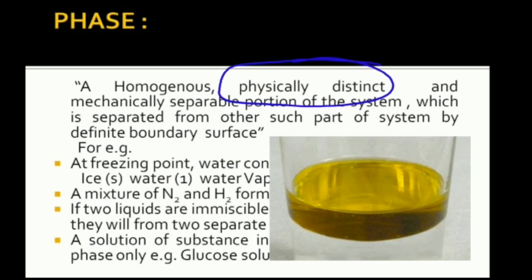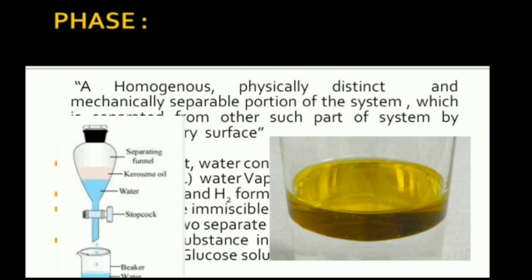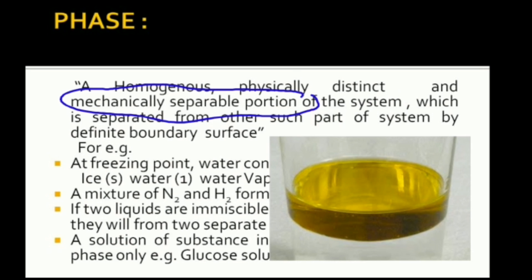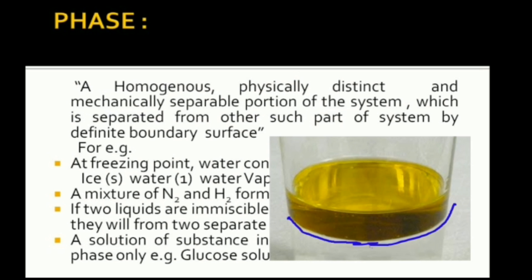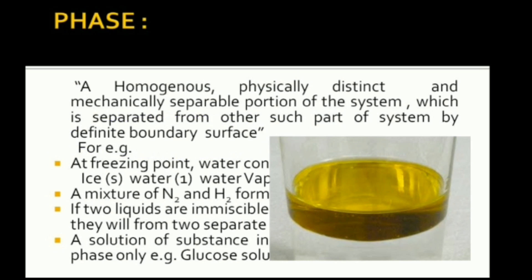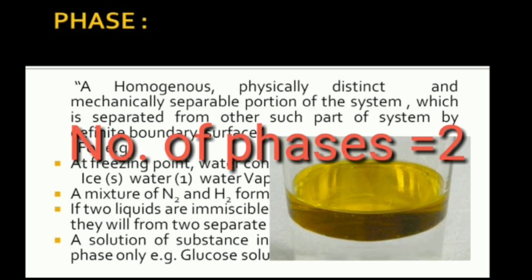By some means we can separate these two portions — as you know, by using a separating funnel we can separate them. These two homogeneous portions are also separated by a definite boundary. So in this heterogeneous system there are two homogeneous portions which are physically distinct, mechanically separable, and separated by a definite boundary.